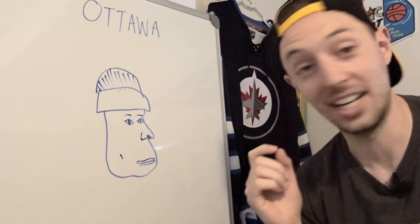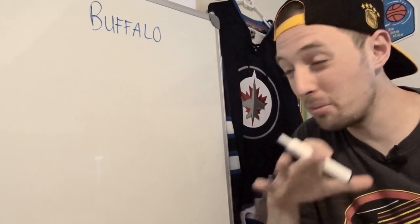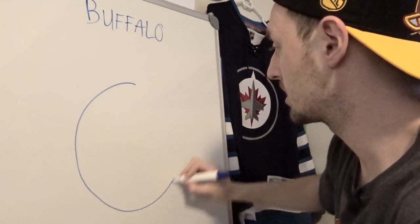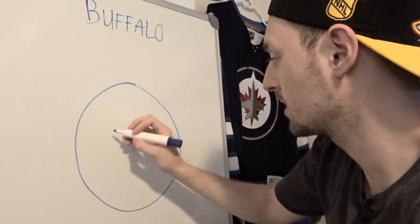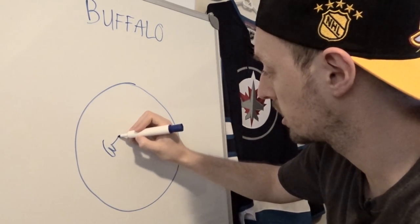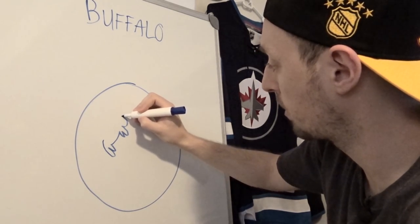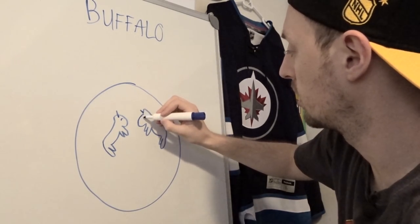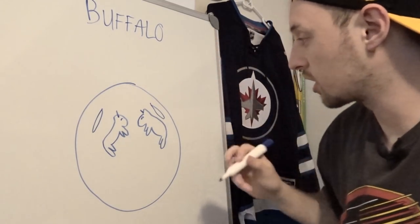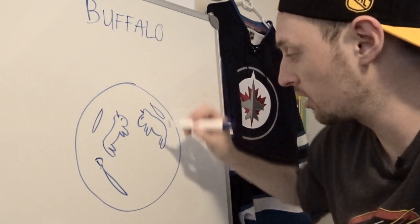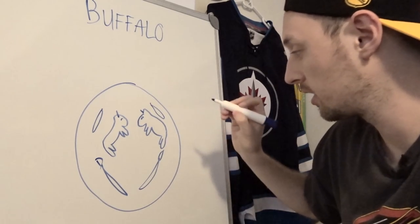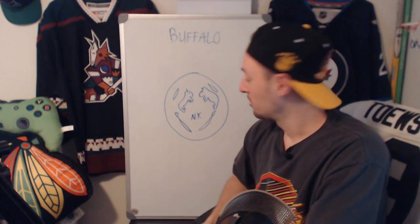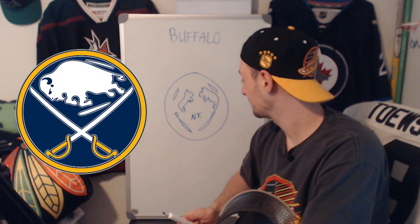We'll go with the Buffalo Sabres. This one should be fairly simple — I know generally how the logo looks. The first thing in any good Sabres logo is a nice circle. Now for the piece de resistance — the Buffalo. Give me one leg, give me another, give me two more, give me a big Buffalo head. I know it's got the little accent thingy here. Sabre number one — I hope they're pointing the right way. There you have it, Buffalo Sabres. I'll give it a five out of ten, more like a two.